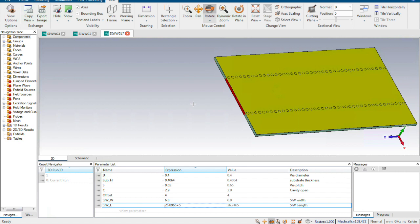So I set the metal via diameter to be 0.4 mm, which obviously satisfies the requirement that via diameter should be smaller than guided wavelength over 5. And I set the pitch to be 0.65 mm, which is obviously smaller than 2 times of the via diameter. As for the thickness of the substrate, it is just a random number I used.